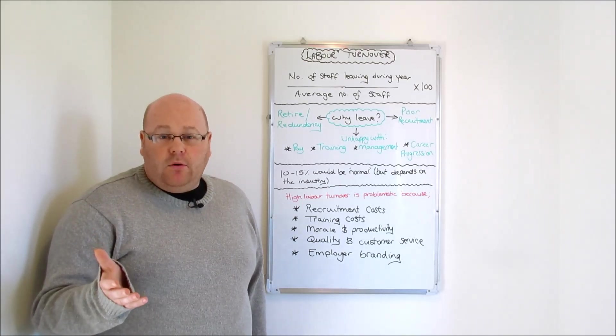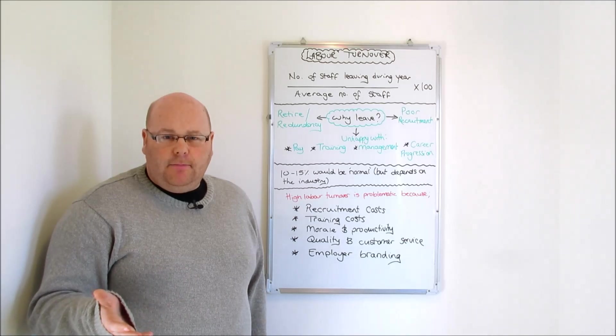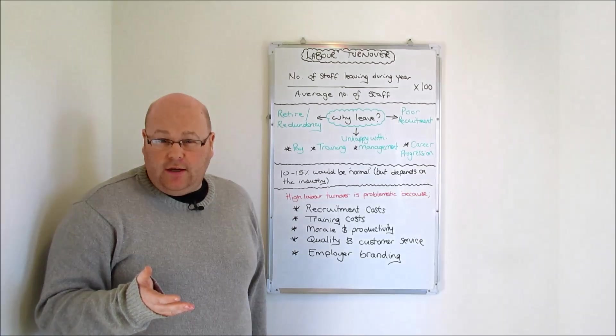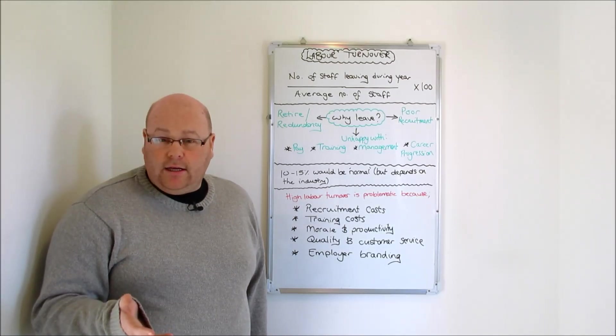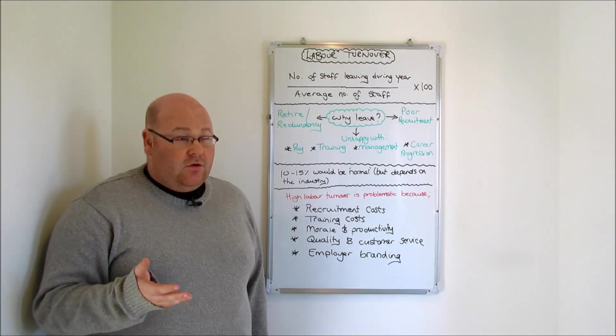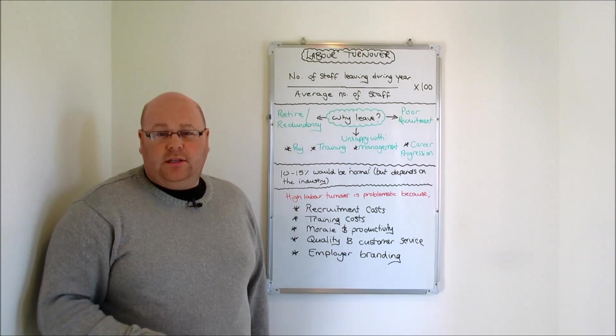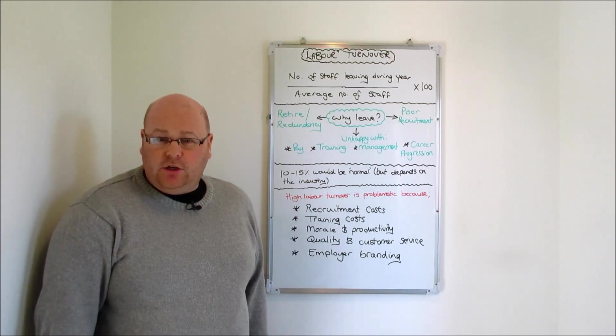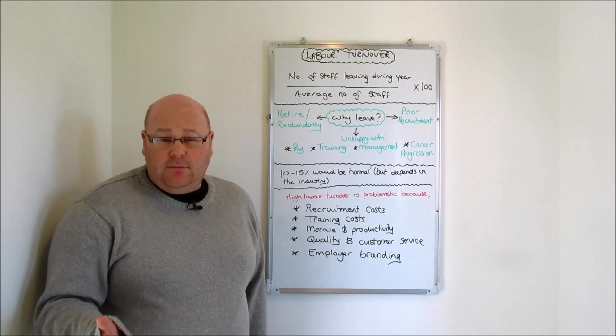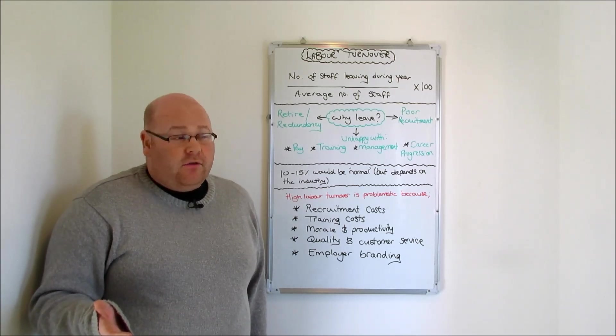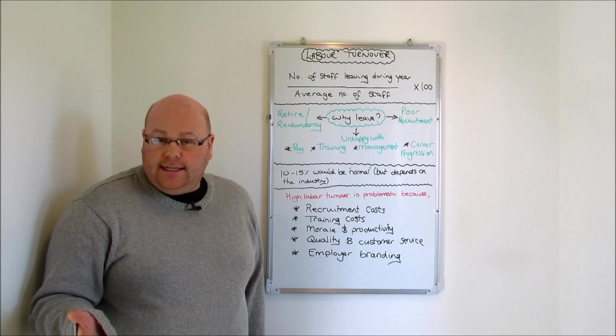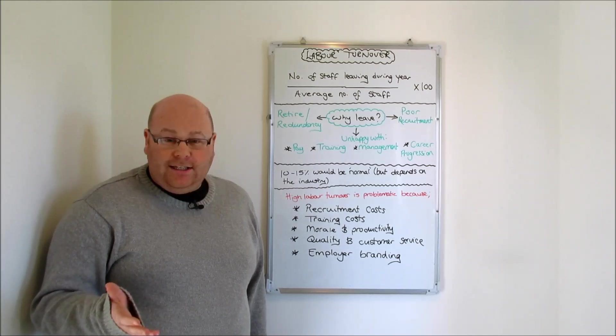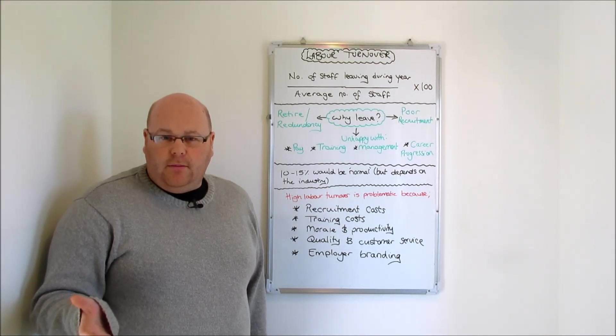But there might be other reasons why employees are unhappy and end up leaving the business. Maybe it's because they're disgruntled about the level of pay they've achieved. Maybe they're dissatisfied with the training they're being given and feel they need greater investment and greater skills to perform their role. Maybe they've become dissatisfied with the management or leadership shown in the organisation and it's led to motivation issues. Maybe they even feel there aren't adequate career progression opportunities in the business. They feel like their pathways to promotions are blocked or non-existent, and so they want to go and work for somebody else.